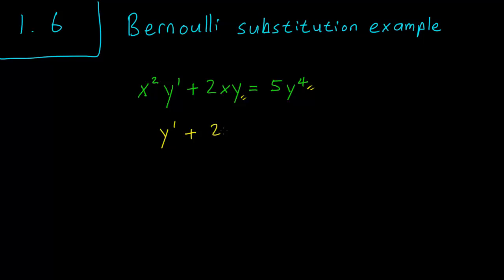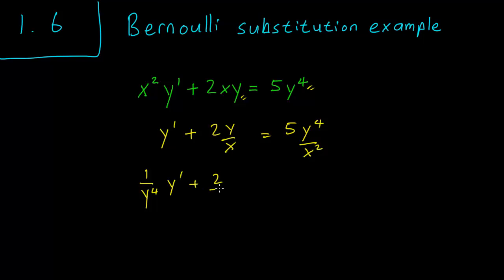y' plus 2y over x equals 5y to the fourth over x squared. So next, we divide everything by this large power of y. We get 1 over y to the fourth times y', plus 2 over x times 1 over y cubed, equals 5 over x squared.